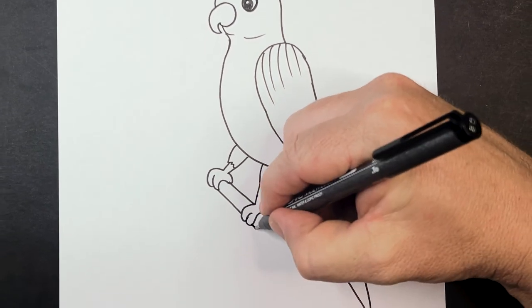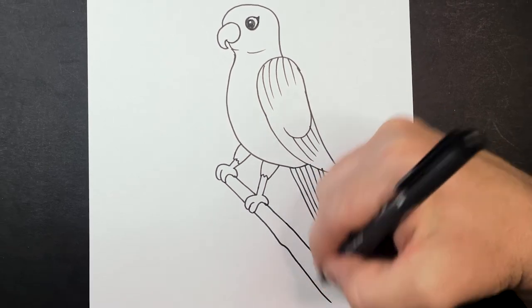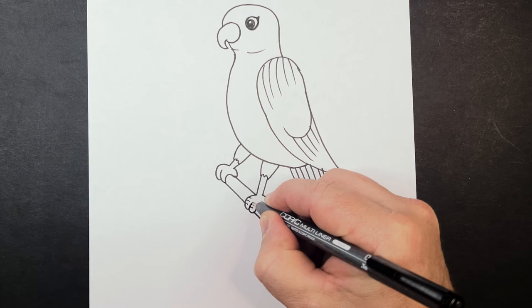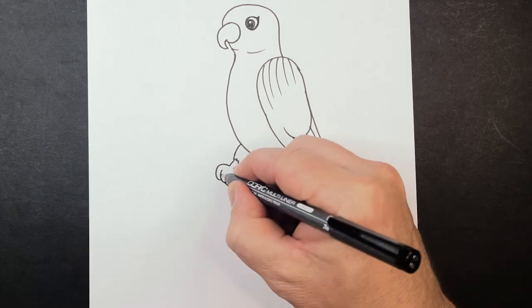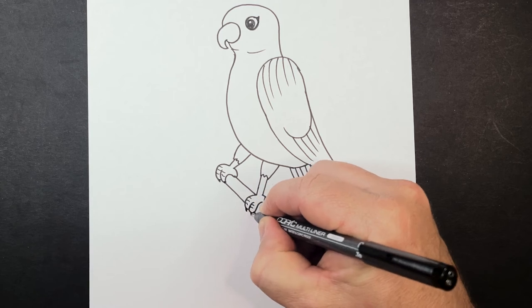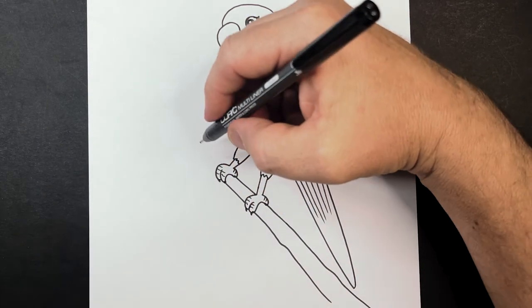Now you can see that I've got this female sitting on a branch looking pretty good. Don't forget to put some of the little details on the feet there, little wrinkles, some little claws on there as well, and then we can finish off the branch.